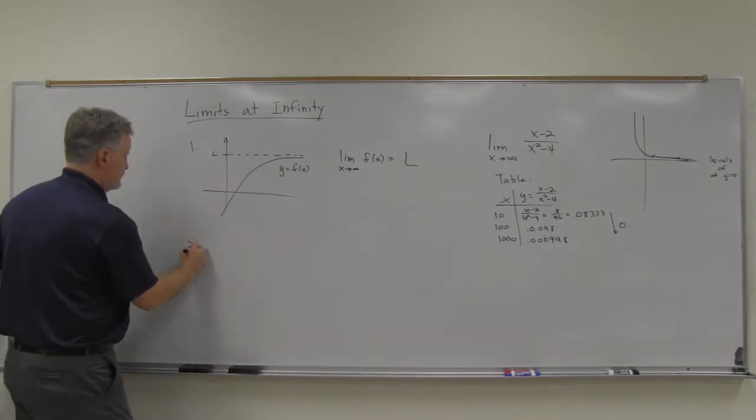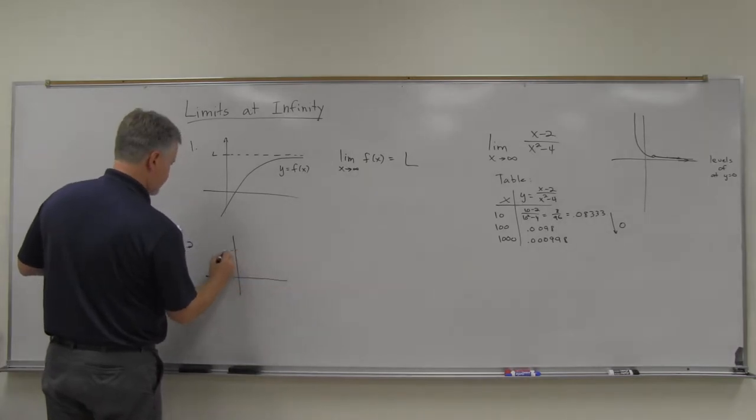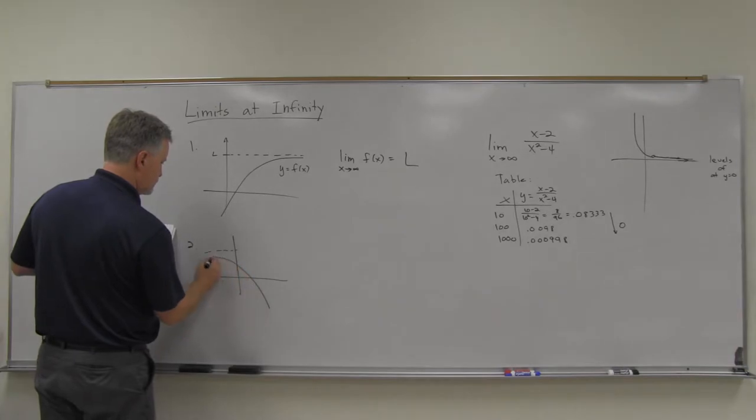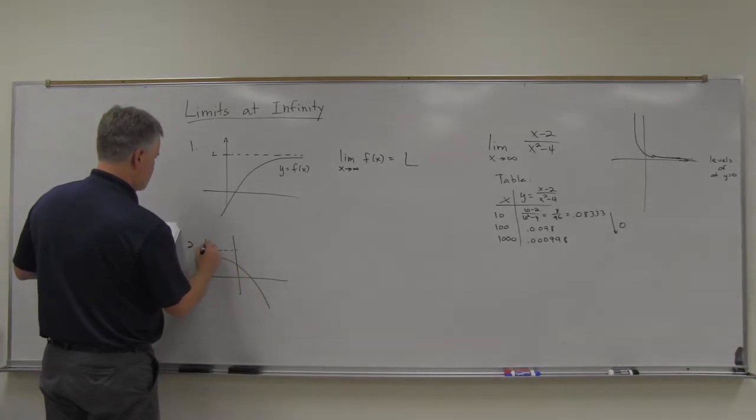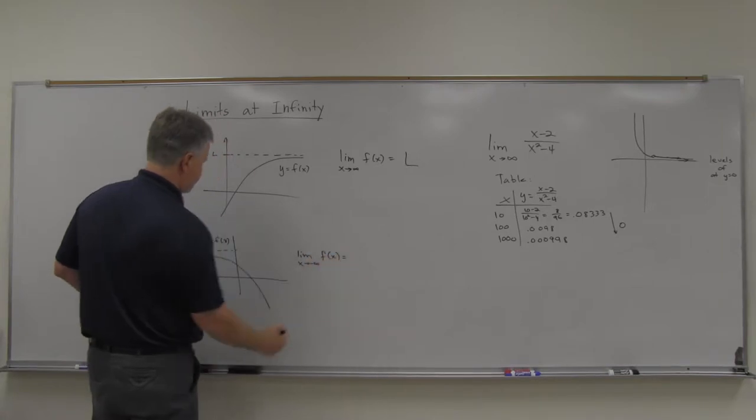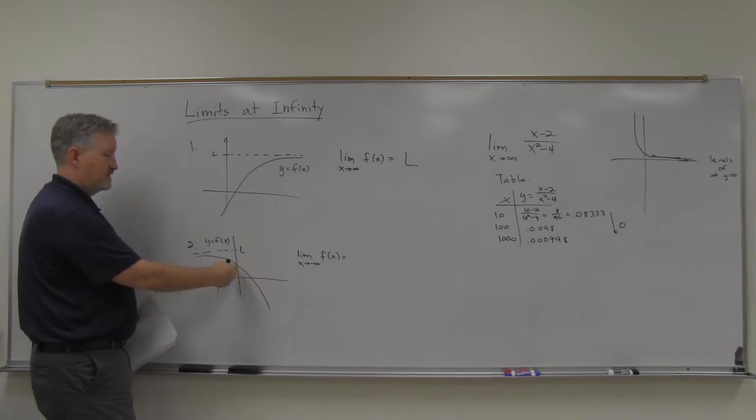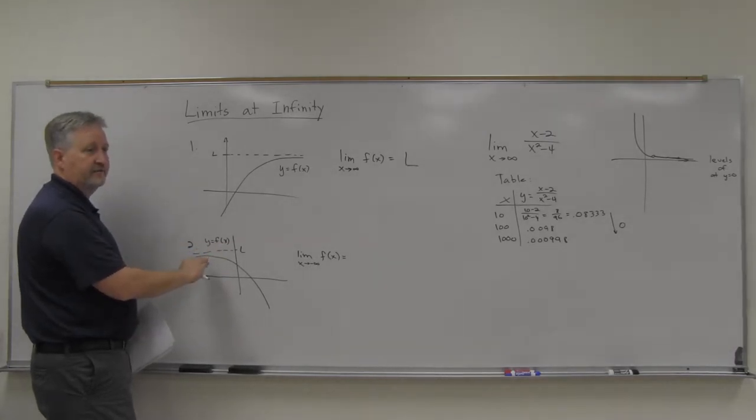And then on number two, same idea. This is f of x here. And so the limit as x goes to negative infinity of f of x. Yeah, so if you've got this function, and as you go out to the negative infinity as far as x goes, and it levels off at a certain level, I guess I picked L there, but, well, I think it's limit, actually.